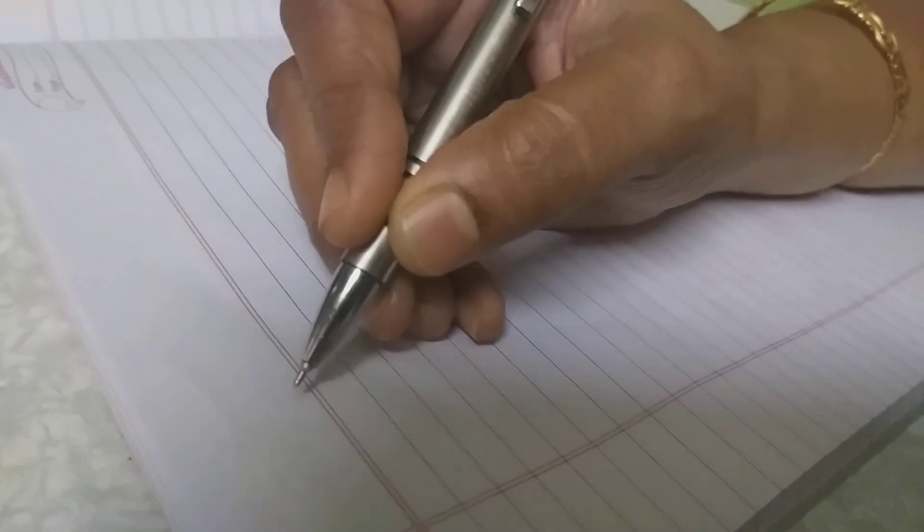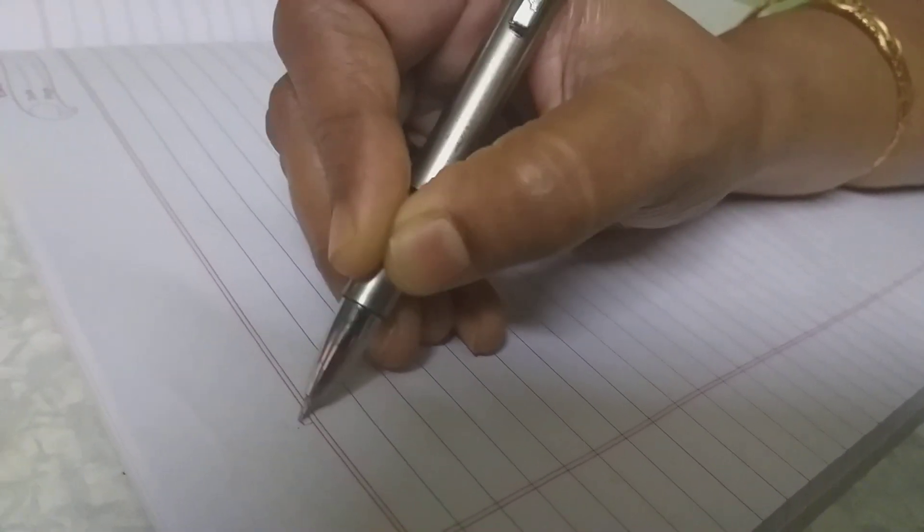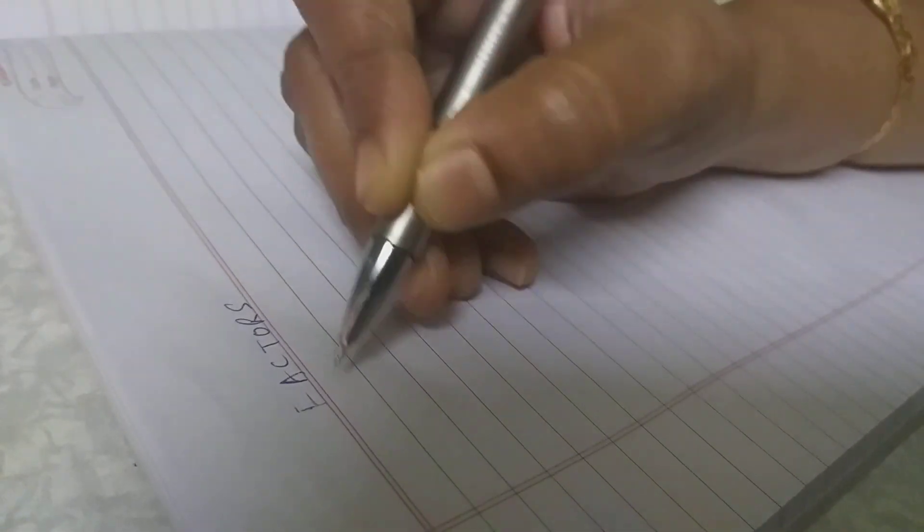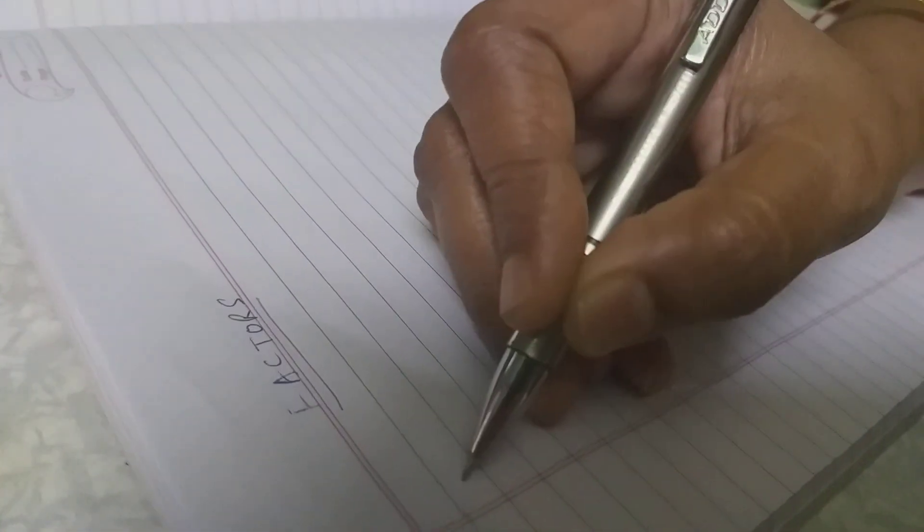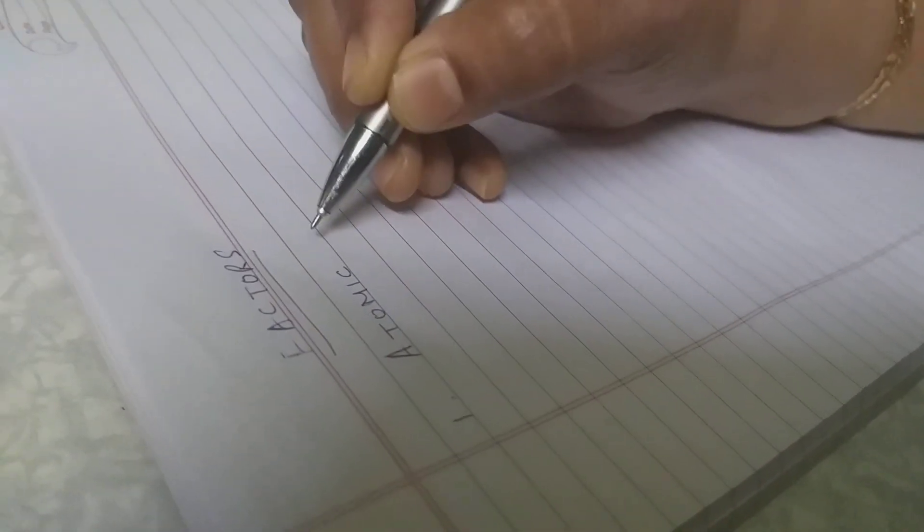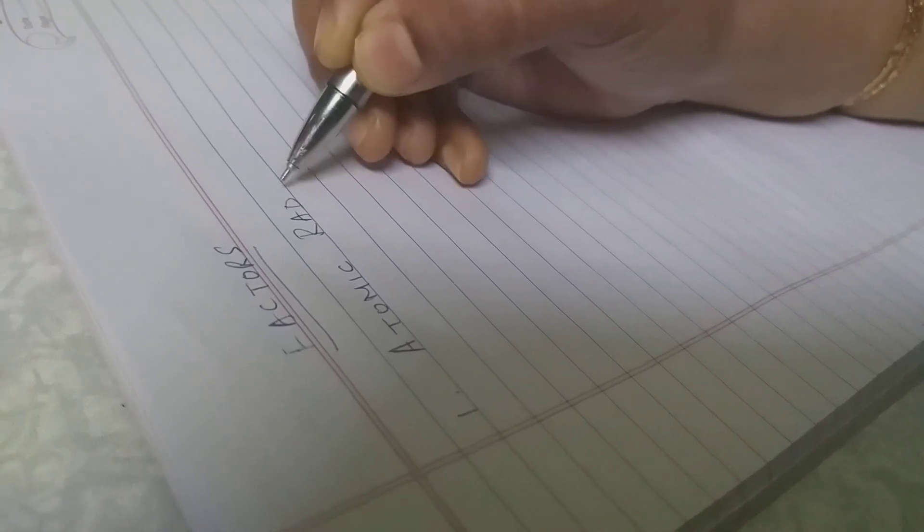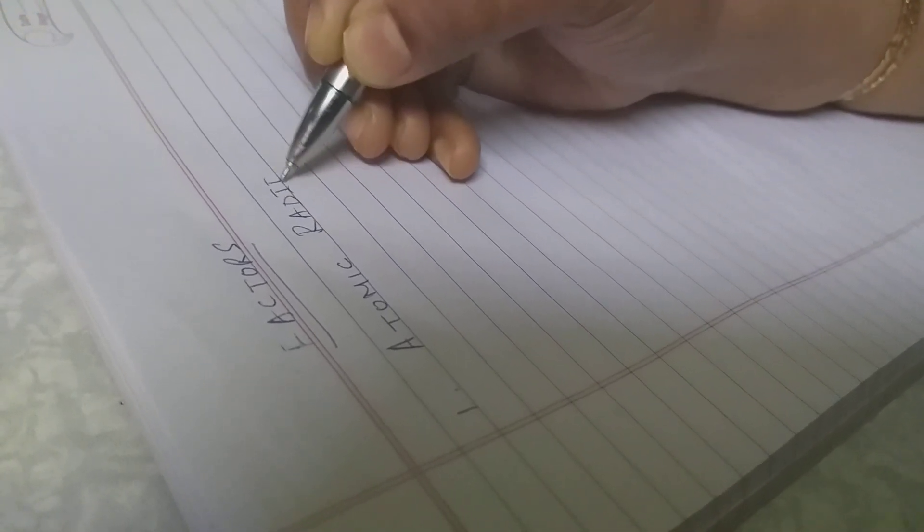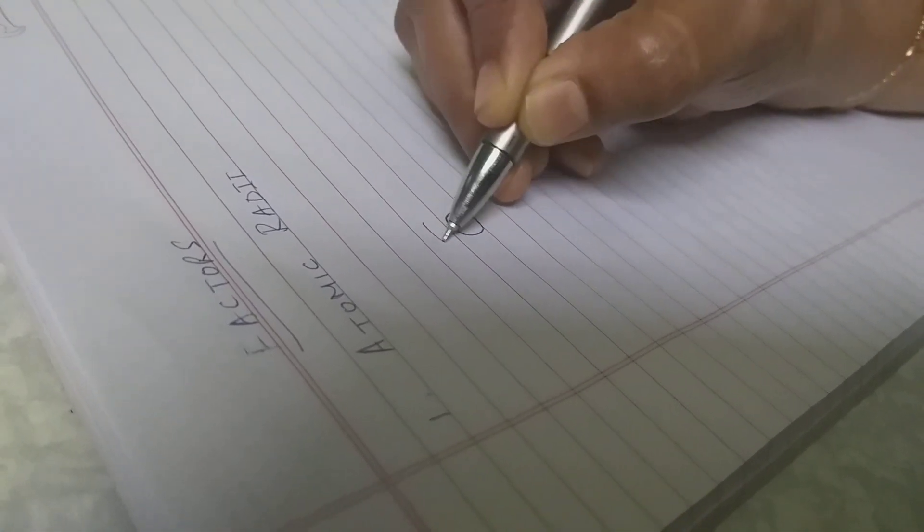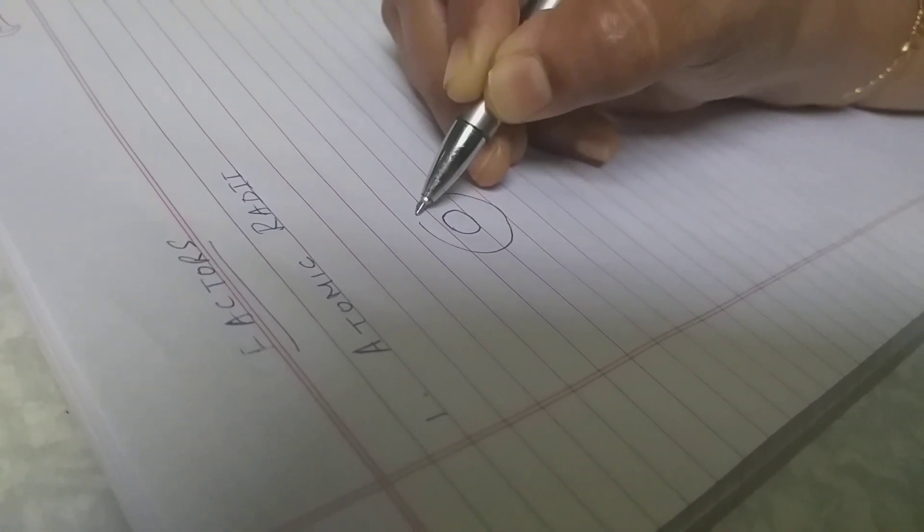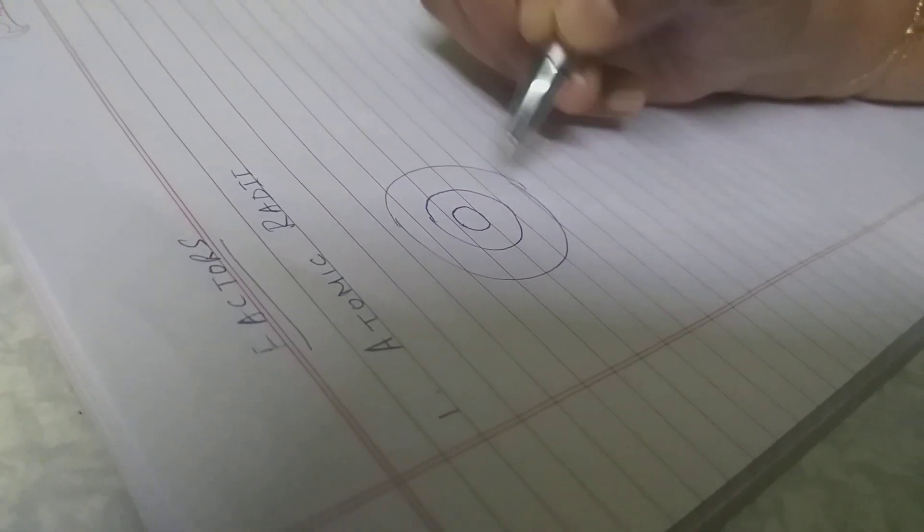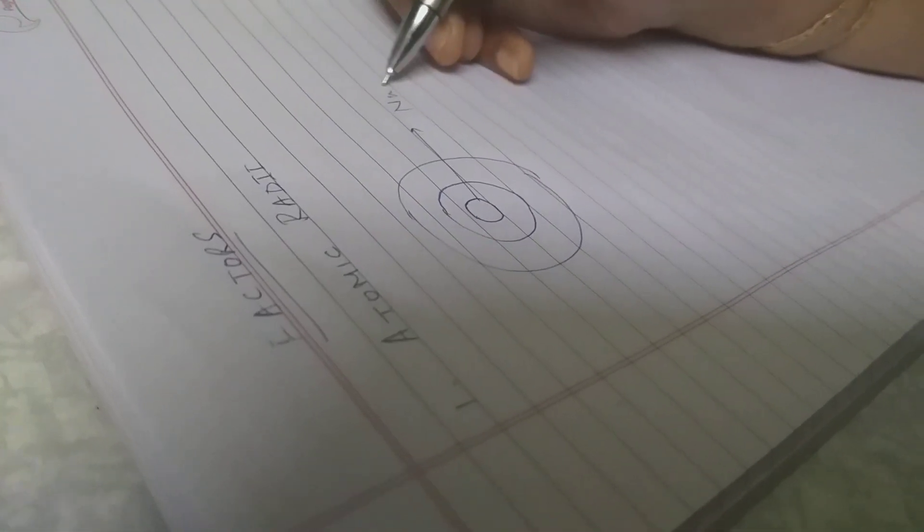The main two factors which affect the periodic trends: the first factor which is very important is known as the atomic radii. Now what is atomic radii? You should understand here. See, I am drawing an atom. This is the nucleus. This is supposing one shell, this is another shell.